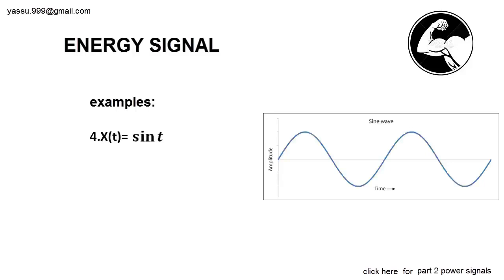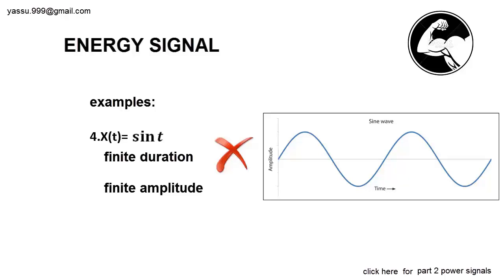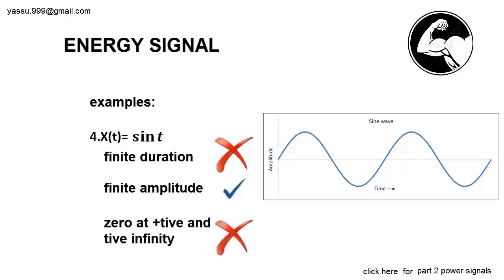Now I am going to take a periodic signal sin(t). Is it having a finite duration? No, since it is extending from minus infinity to plus infinity, it doesn't have a finite duration. Is it having a finite amplitude? Yes, at each and every interval of time it has some finite amplitude. But at t tends to minus infinity and plus infinity, we can't judge its amplitude, so it doesn't satisfy the third condition. So the given signal is not an energy signal.